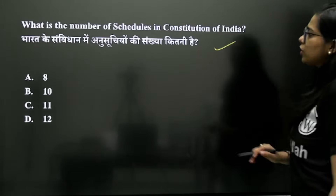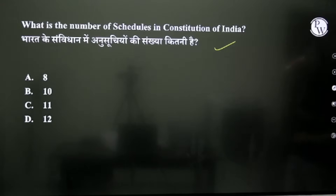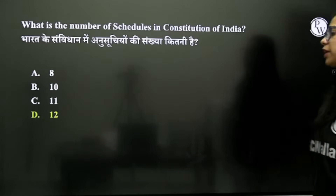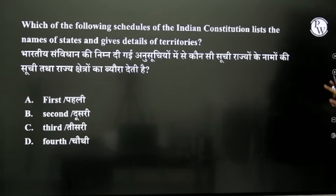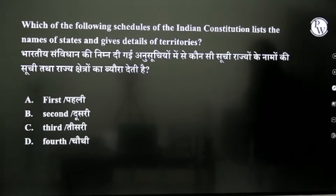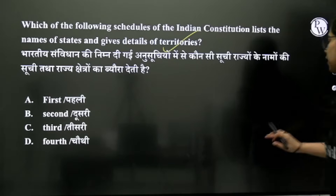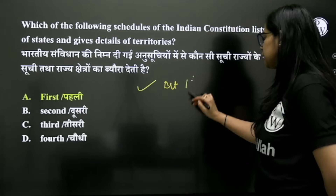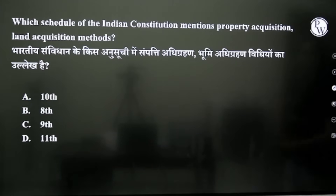So, what is the number of schedules in the Indian Constitution? भारत के संविधान के अंदर कितने schedule हैं? The answer is 12 schedules. Initially there were 8, and then 9, 10, 11, 12 were added. Which schedule of the Indian Constitution lists the names of states and details of territories? That is Schedule Number 1, which relates to Articles 1, 2, 3, and 4.